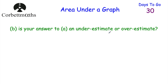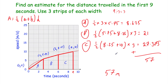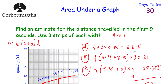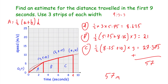Part B asks: is our answer of 57 metres an underestimate or an overestimate? Looking at the graph, the lines we've drawn are actually below the actual curve — particularly visible with triangle A, where there's quite a gap between the chord and the curve. All the chords are below the actual graph, so our answer of 57 metres is an underestimate.